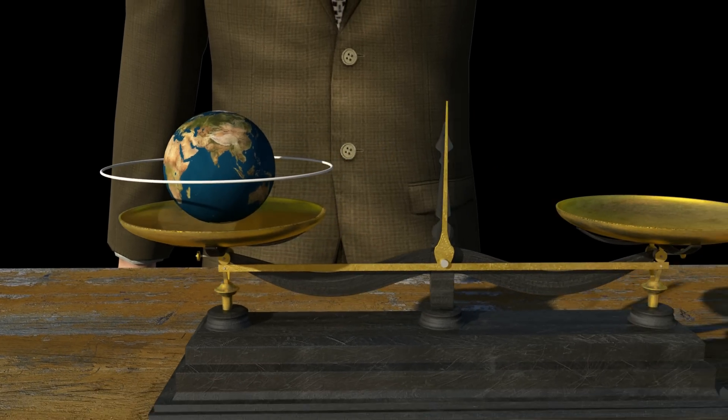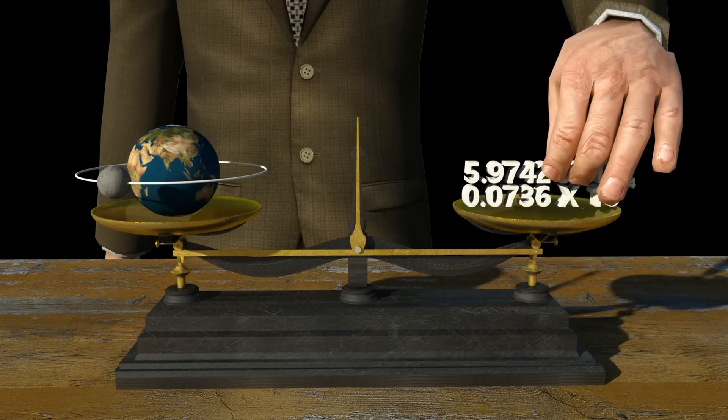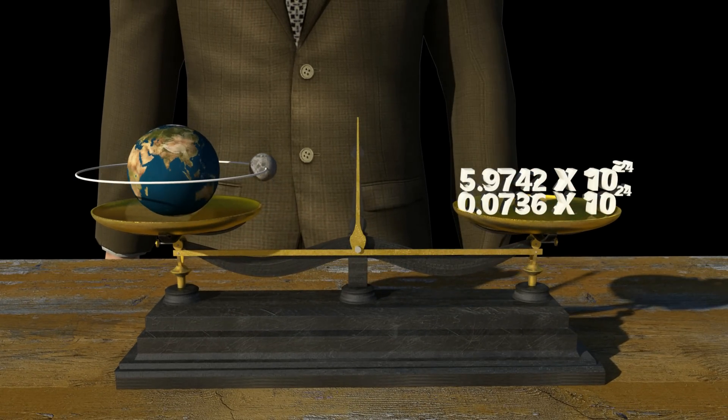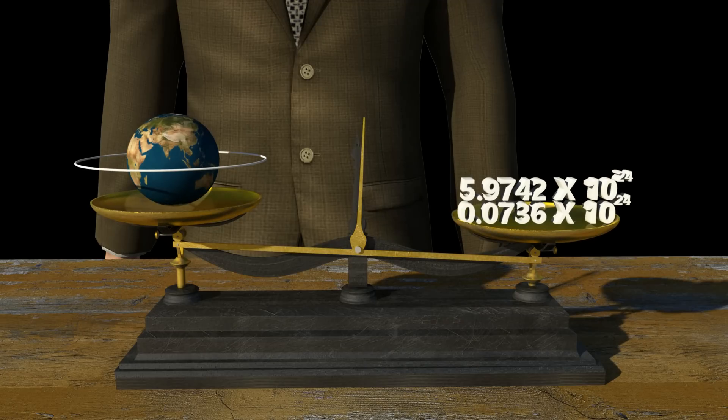What happens when we measure their mass together? Will it be the sum of each of their masses? No, it is not. The combined mass of Earth and the moon is smaller than the sum of each of the masses. But why?